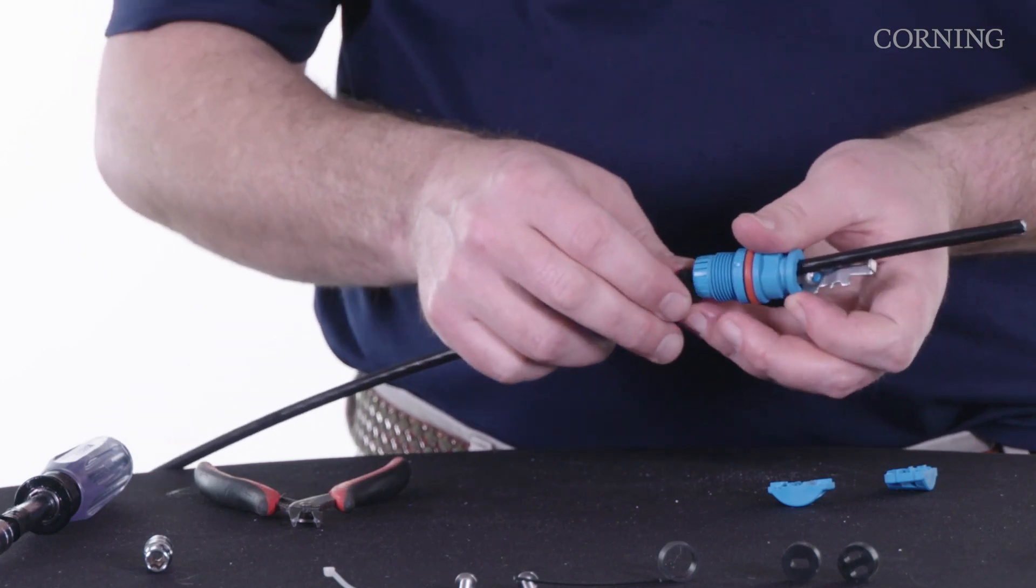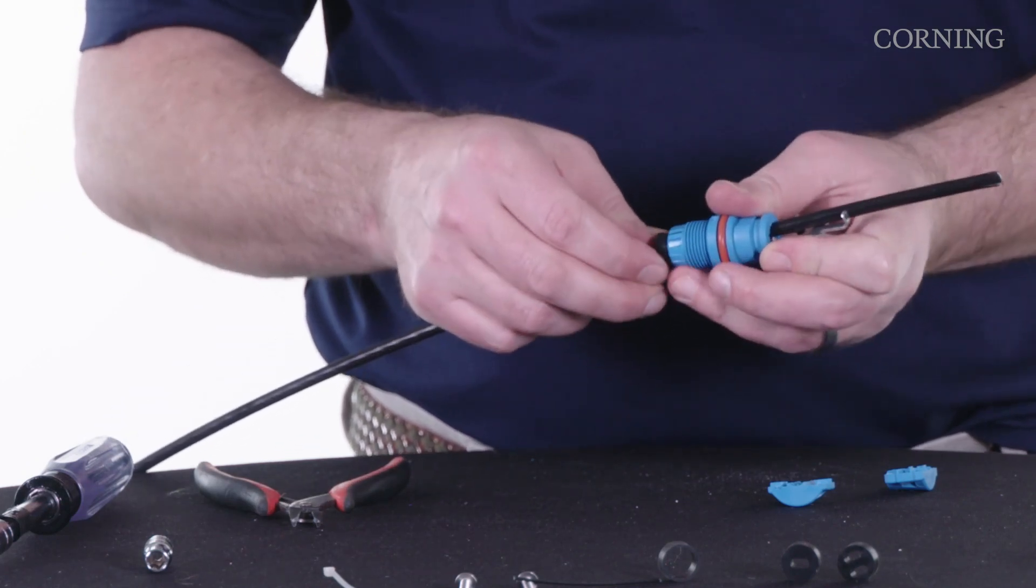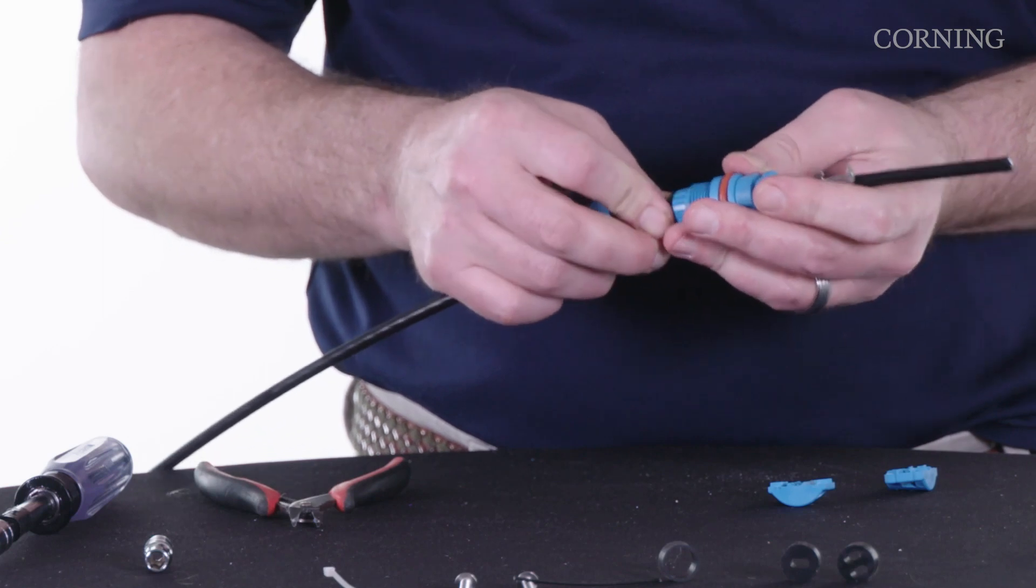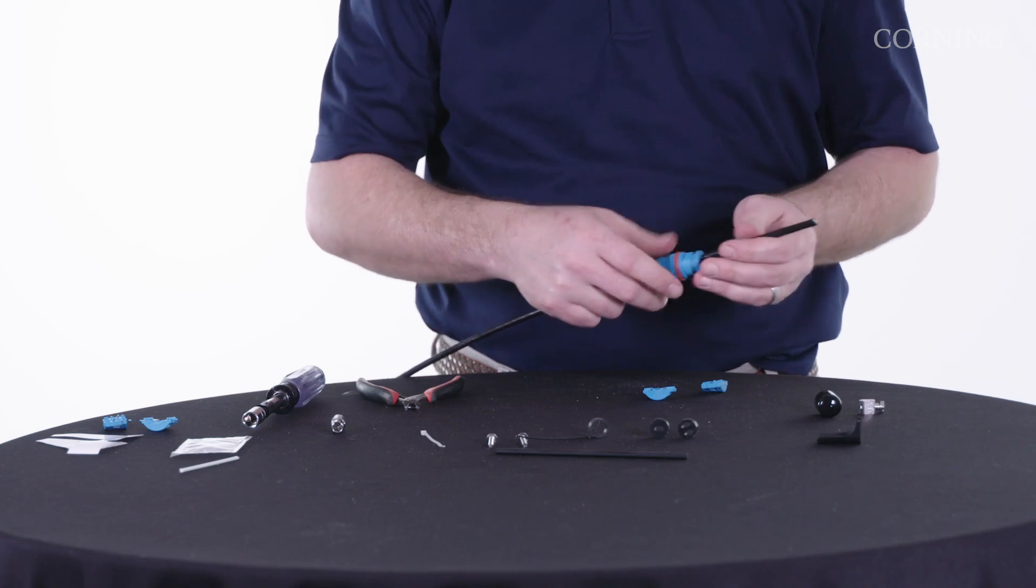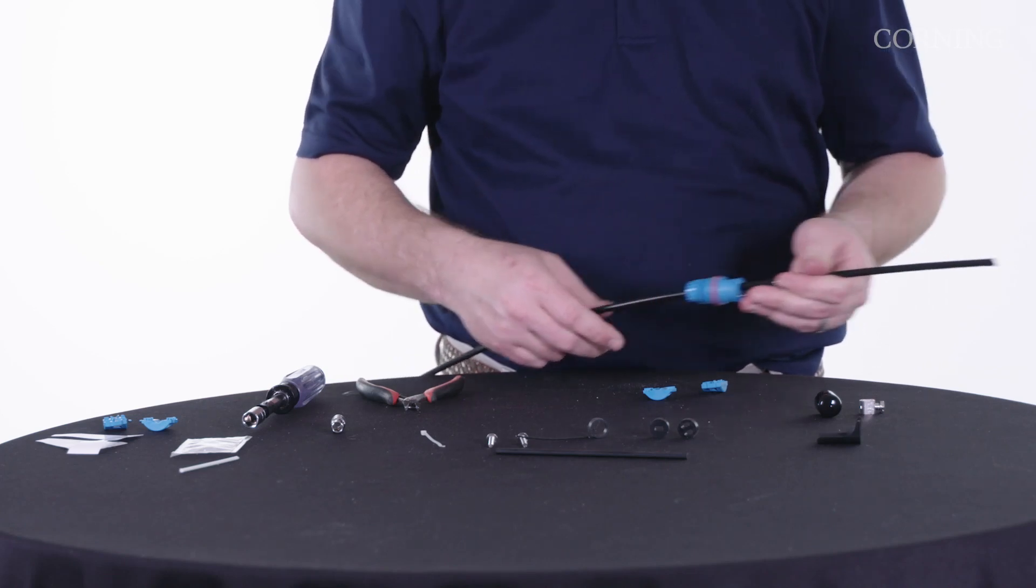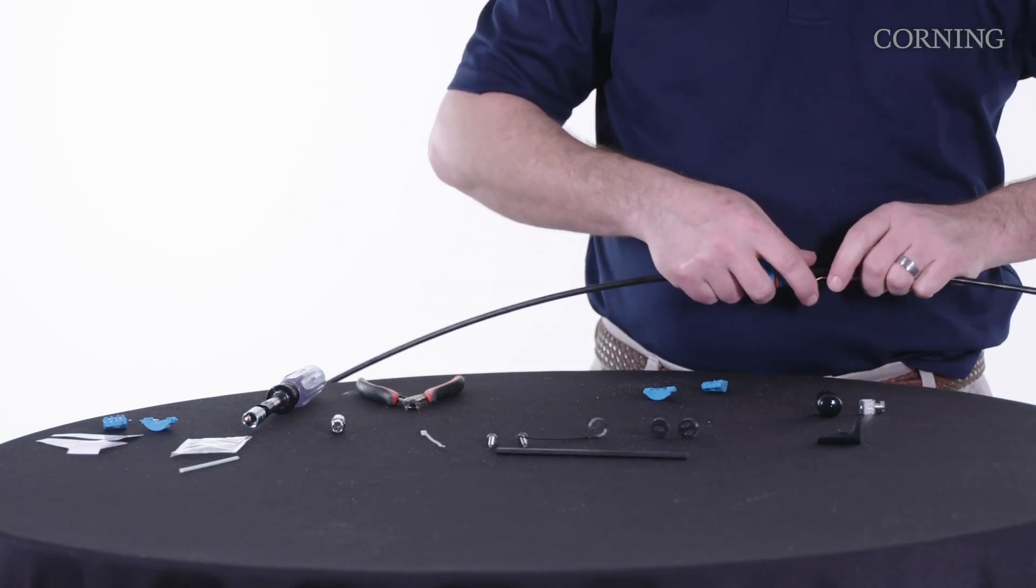Now that grommet goes inside, that little washer grommet thing goes inside of this portion here, just like that.